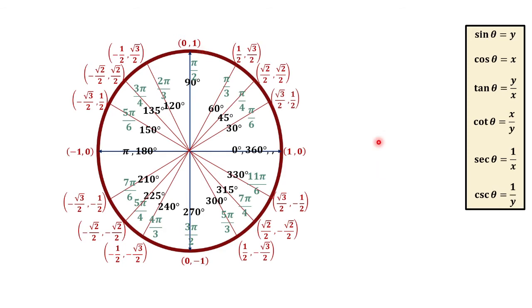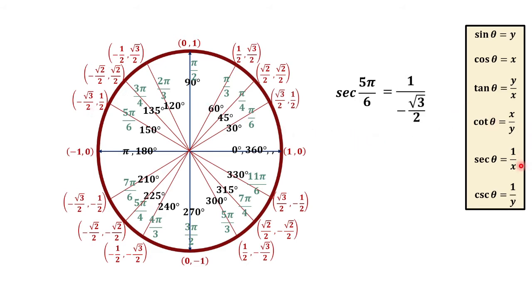For secant 5 pi over 6, secant theta is equal to 1 over x. 5 pi over 6 is equivalent to 150 degrees. So we need the x-coordinate, which is negative square root of 3 over 2. Substituting, we have 1 over negative square root of 3 over 2, and multiplying by the reciprocal gives negative 2 over square root of 3.